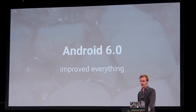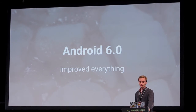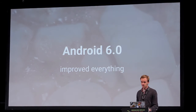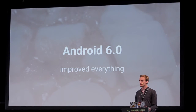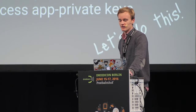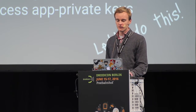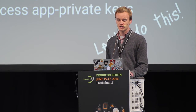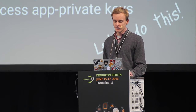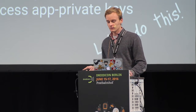Android 6 / Android M improved this drastically. They changed everything under the hood and reimplemented it — there was a complete rewrite of both the KeyMaster and KeyStore components. This talk will focus on the JCA KeyStore provider.